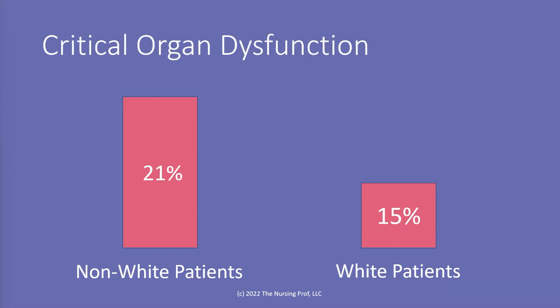Now let's take a look at that in terms of critical organ dysfunction, which is a very important component here as well. About 15% of our white patients had critical organ dysfunction as a result of this miscommunication done by the pulse ox, whereas in non-white patients that was 21%. So there is a significant difference in critical organ dysfunction as a result of this blood gas measuring inaccurately.